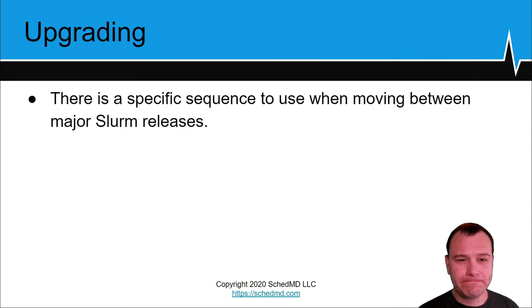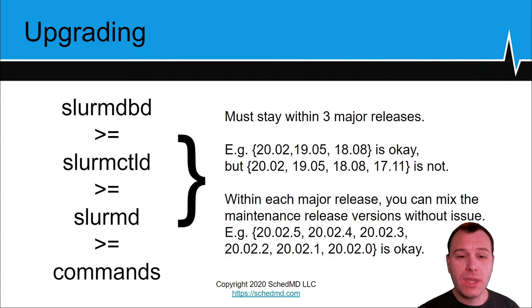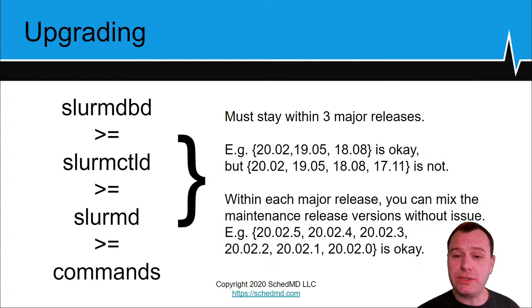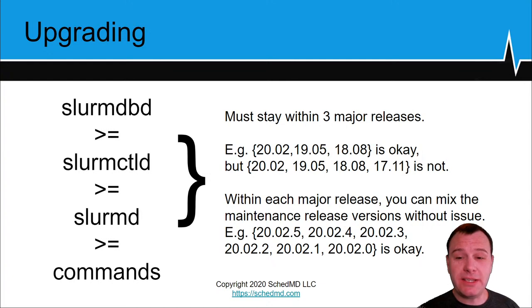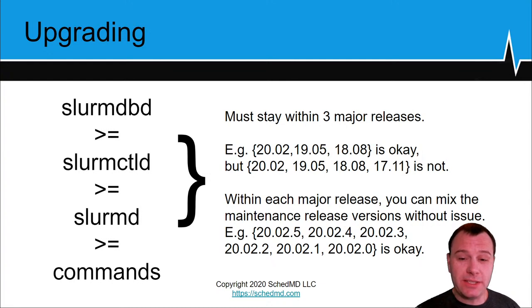There is a specific sequence to use when moving between major Slurm releases. We have built-in support for the last three major releases, so long as you follow this hierarchical sequence: the slurmDBD needs to be greater than or equal to the Slurm controller, and the Slurm controller needs to be greater than or equal to the slurmd's. The slurmd needs to be greater than or equal to the slurmstepd if upgrading with running jobs, though generally sites drain the cluster when moving between major releases. Should you choose to upgrade with running jobs, open a support case so we can assist.